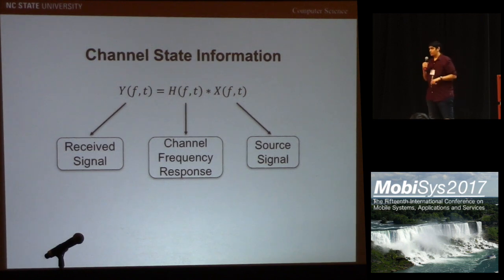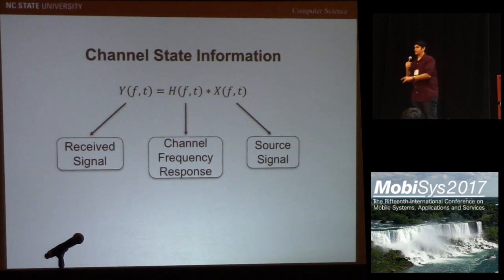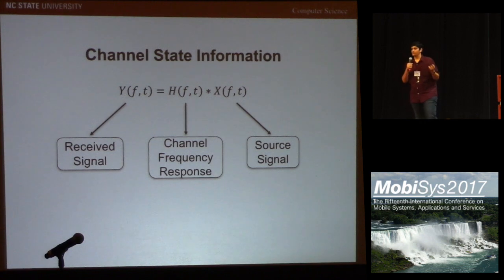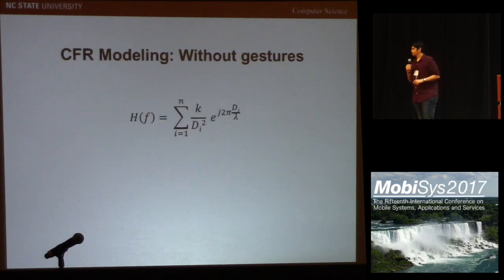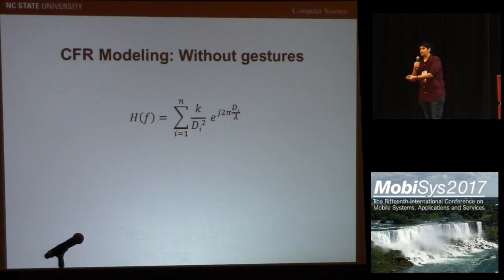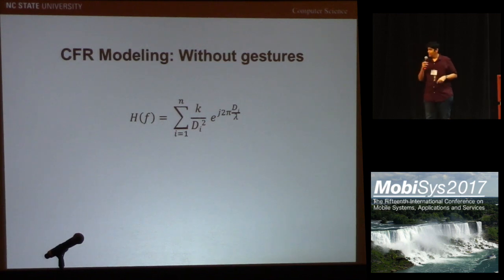In order to understand our translation function, let me first introduce the wireless metric that we use. This equation represents the channel frequency response, CFR, of a wireless signal. If X and Y are the source and received signals respectively, CFR represents how much the signal changes as it traverses the system. This CFR is measured by modern Wi-Fi devices as CSI to improve communication. Since routers use omni-directional antennas, the signal going from the source to the receiver does not take a single path but can go through multiple different paths.